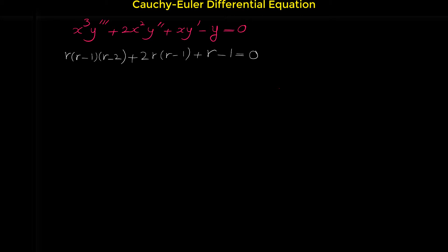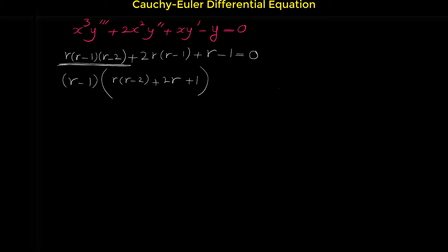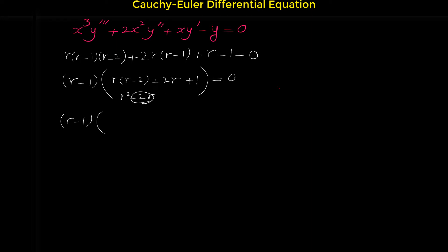Now we have to find r from this characteristic equation. If we look at the terms, we can see that (r-1) is a common factor, so we factor it out. From the first term r(r-2) remains, from the middle term 2r remains, and from the last term 1 remains. Simplifying inside the bracket: r² - 2r + 2r cancel each other, leaving r² + 1.